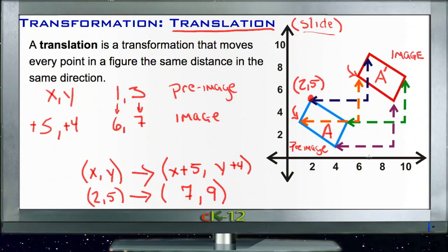And it is. This point up here is (7, 9). So that's the process.